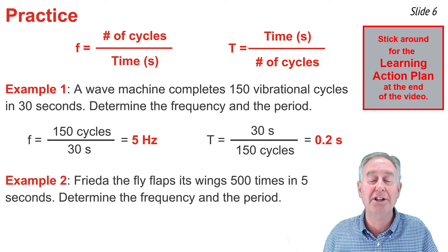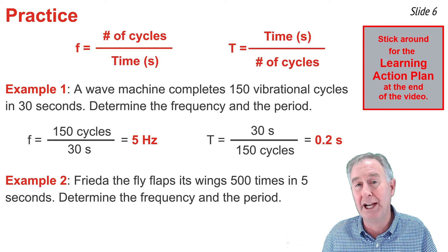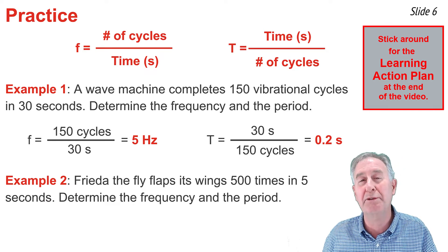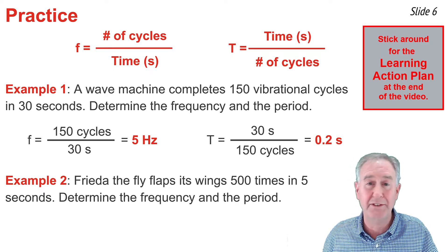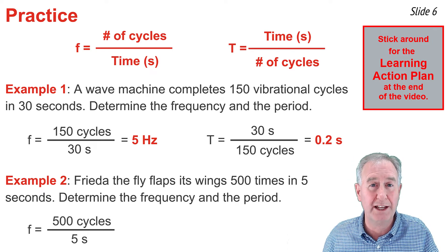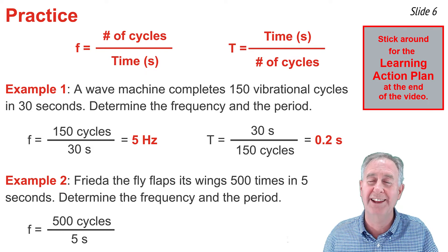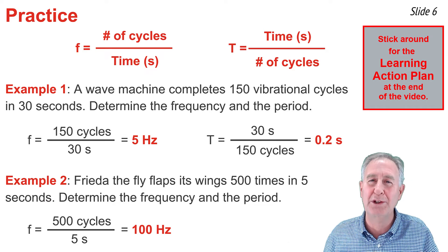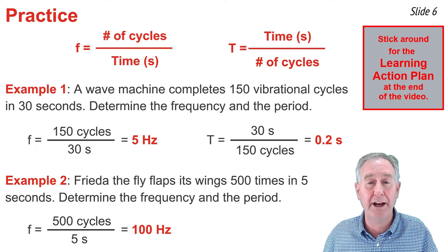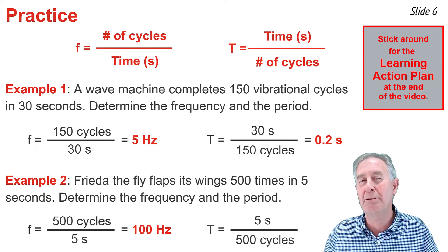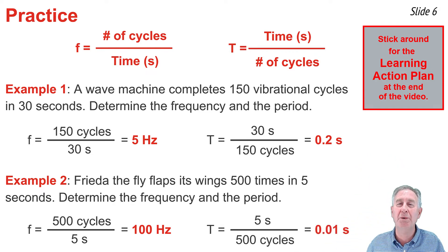In the second example, it's about Freda the fly, who flaps her wings 500 times in 5 seconds to determine the frequency in the period. For the frequency, I take the number of cycles, 500, and divide by the time, which is 5 seconds. 500 divided by 5 is 100 cycles per second. The frequency is 100 hertz. Now for the period, I do the inverse. I take the time of 5 seconds and divide by the number of cycles, 500. And when I do, I get 0.01 seconds.